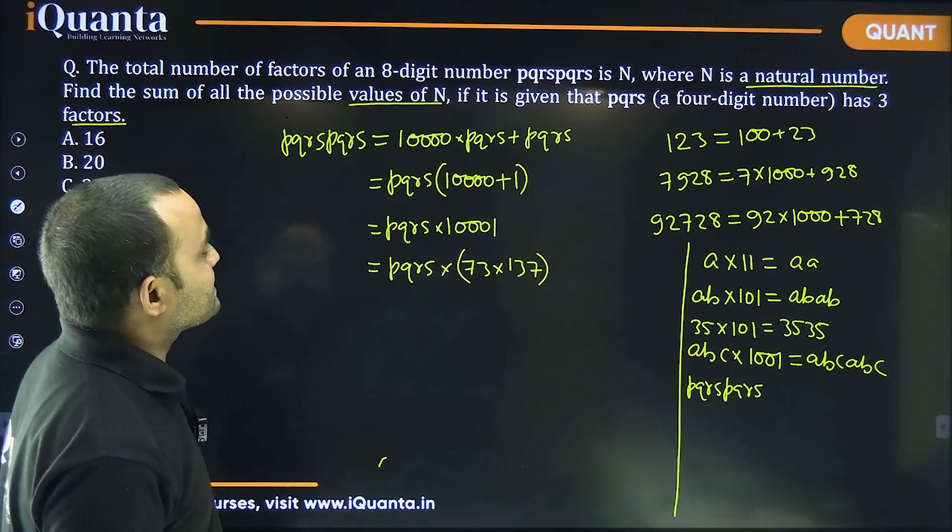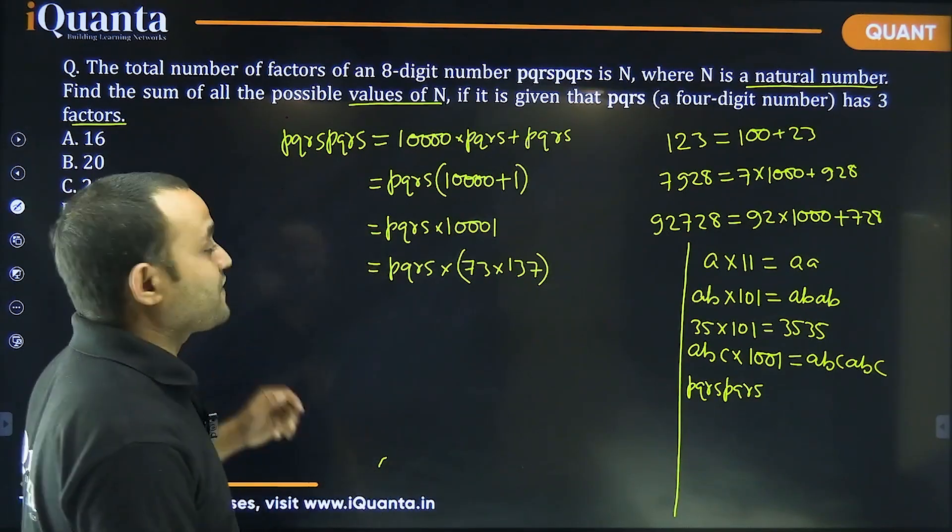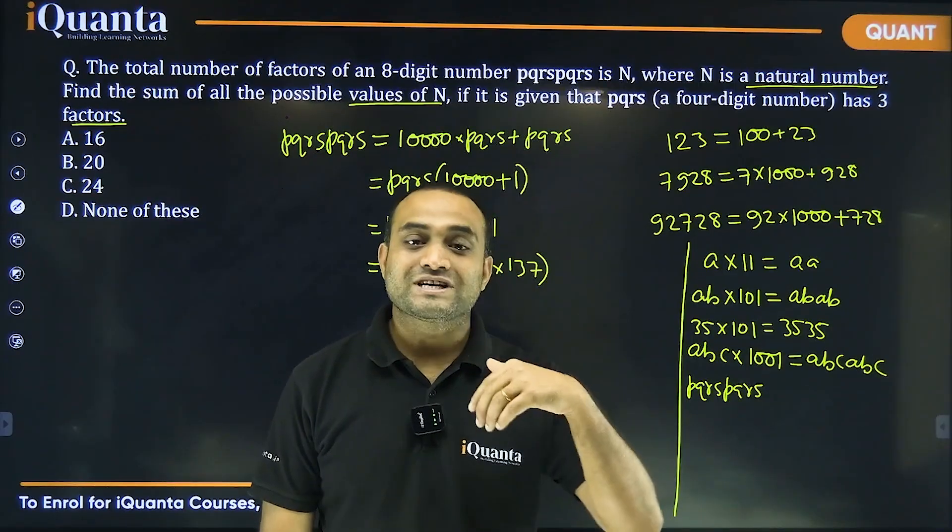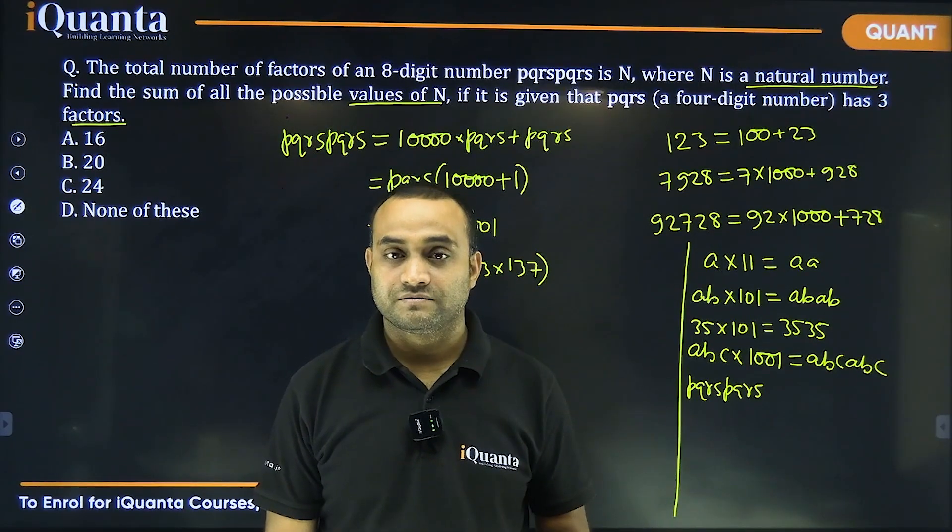Let's say it is given that PQRS has three factors. Which kind of numbers has three factors?